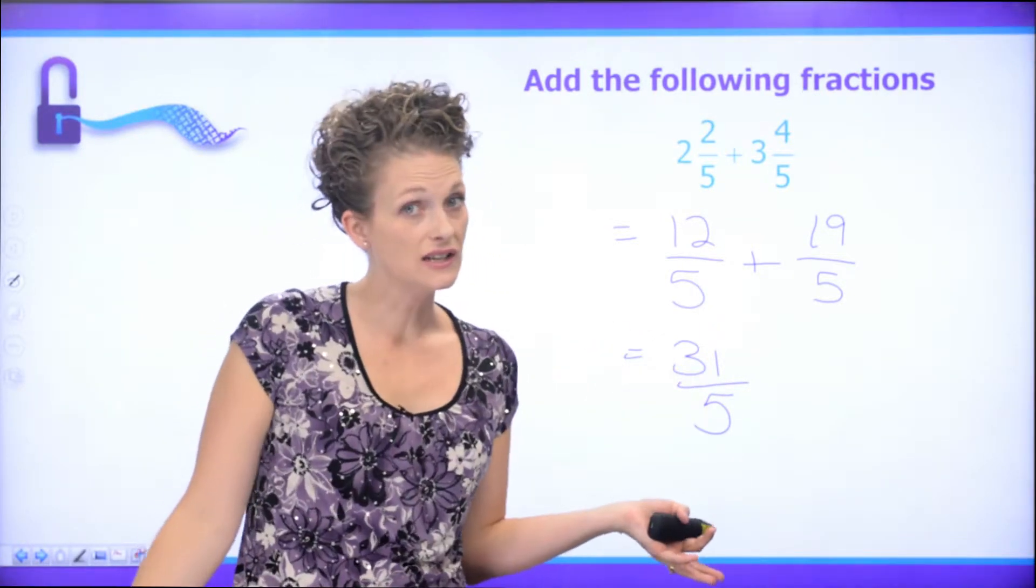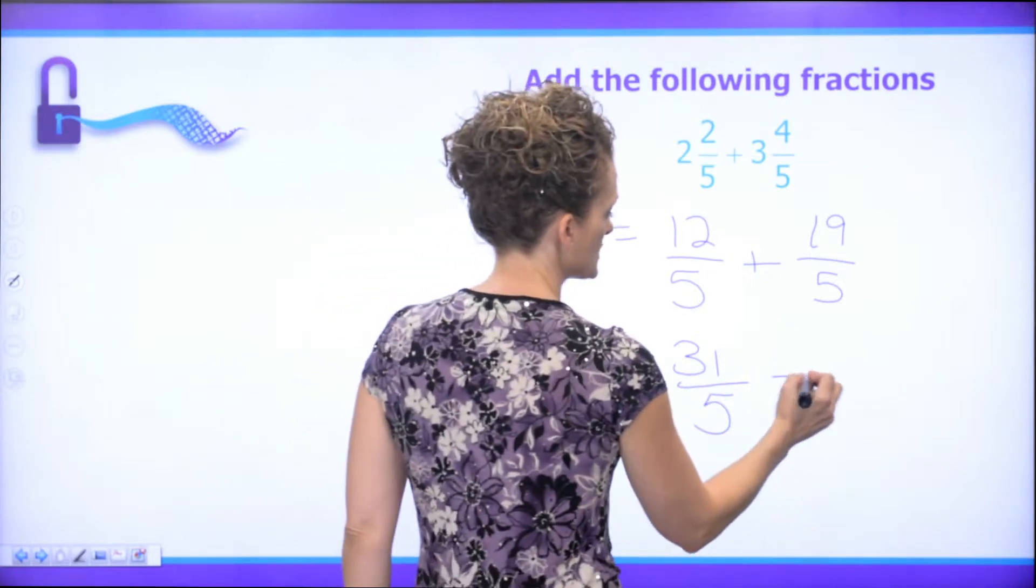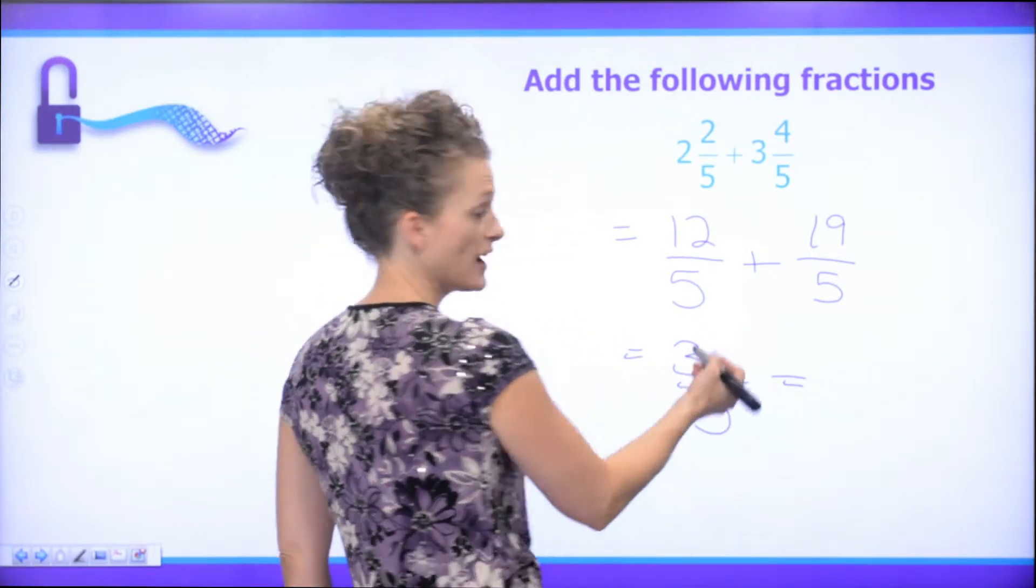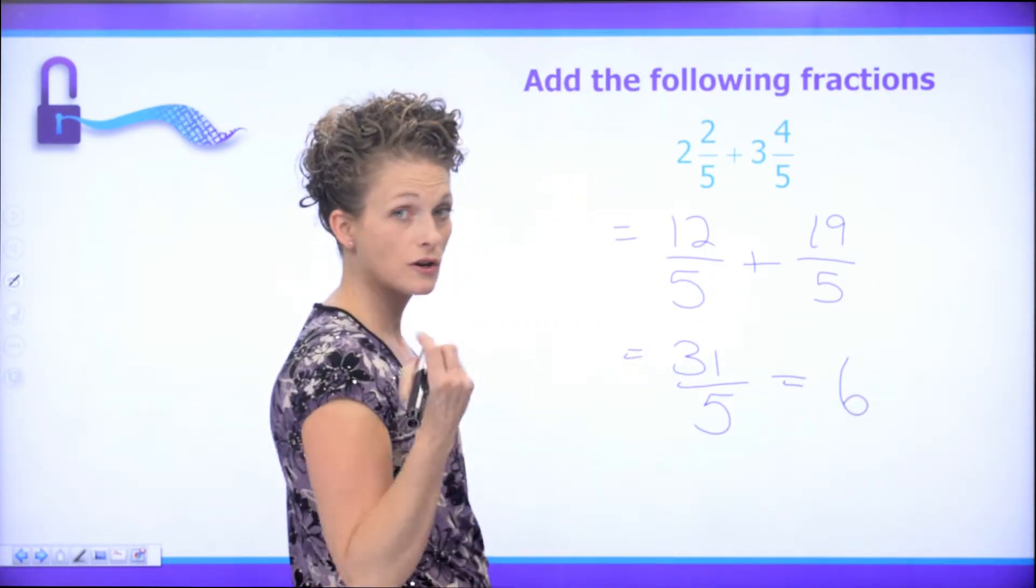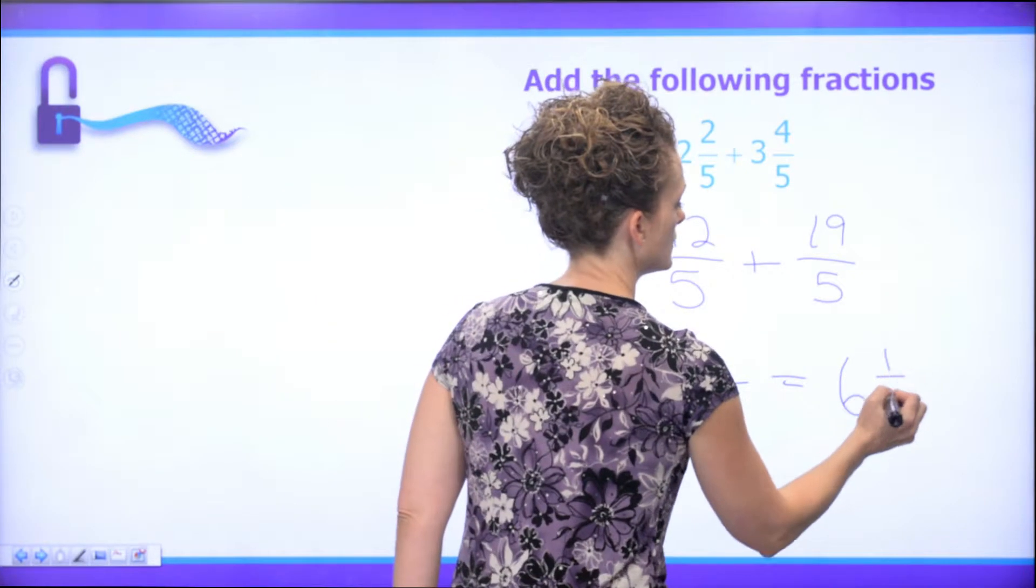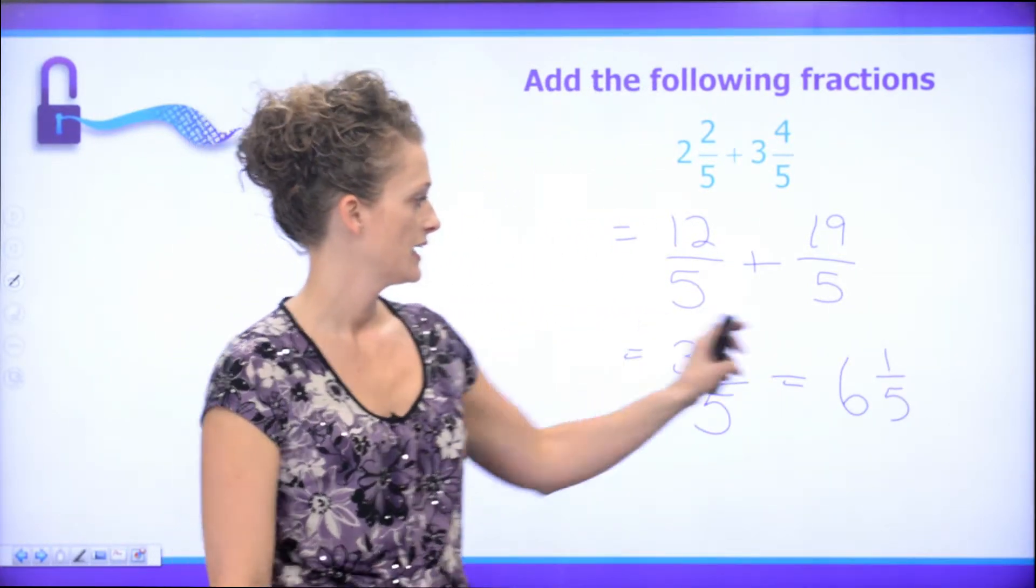And we can leave it like that, or we could change it into a mixed number. It is improper. So, 5 will go into 31 six times with a remainder of 1. So, we have 6 whole parts and 1 fifth.